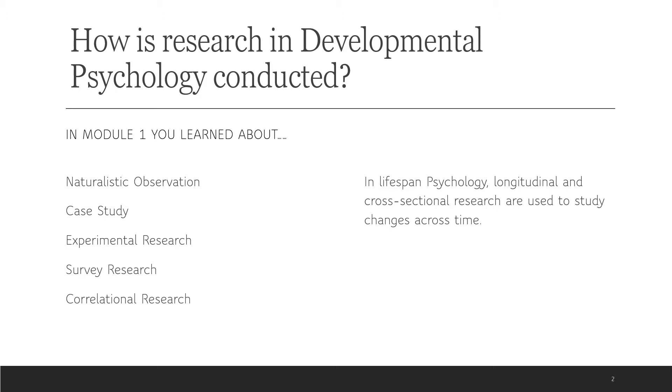And you also learned about correlational research, where we can examine the relationship between two or more variables, but that this type of research does not allow us to establish cause and effect. It only tells us about the relationship or patterns that we see between those two or more variables. Well, in lifespan psychology, we can use each of these methods, but we also find that longitudinal and cross-sectional research methods are very helpful approaches to understanding the changes that take place over time. So in this video, you're going to be learning about the way that we can study development over the lifespan.